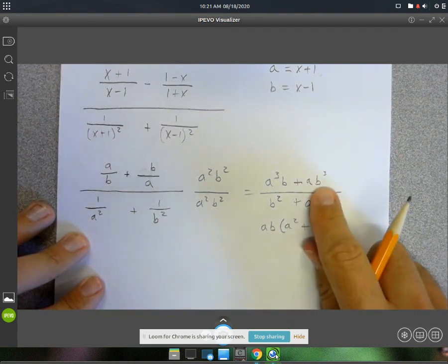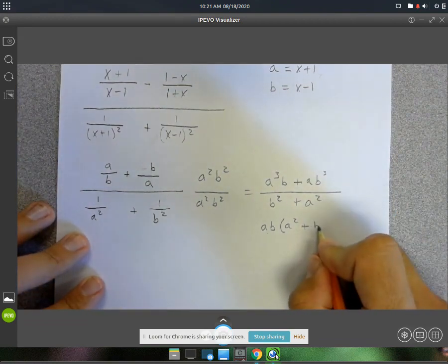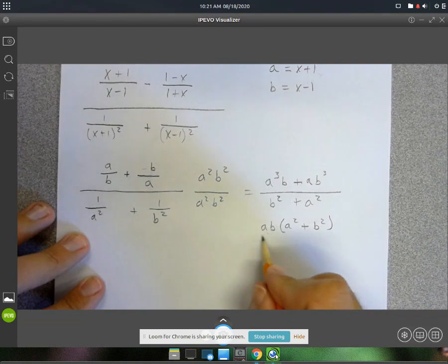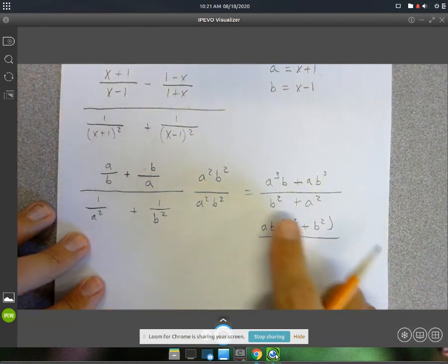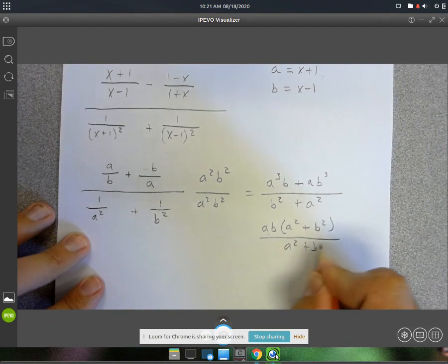And then this one, it's going to be a b squared. And on the bottom, I've got the same thing, b squared plus a squared. a squared plus b squared.